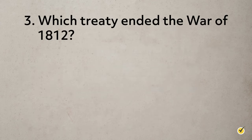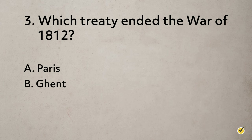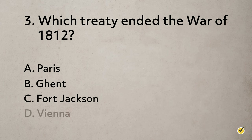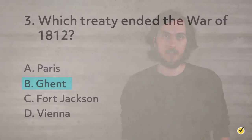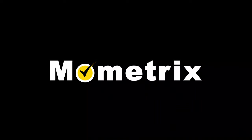Number three: Which treaty ended the War of 1812? A. Paris. B. Ghent. C. Fort Jackson. Or D. Vienna. The correct answer is B, the Treaty of Ghent. I hope this review was helpful. Thanks for watching and happy studying.